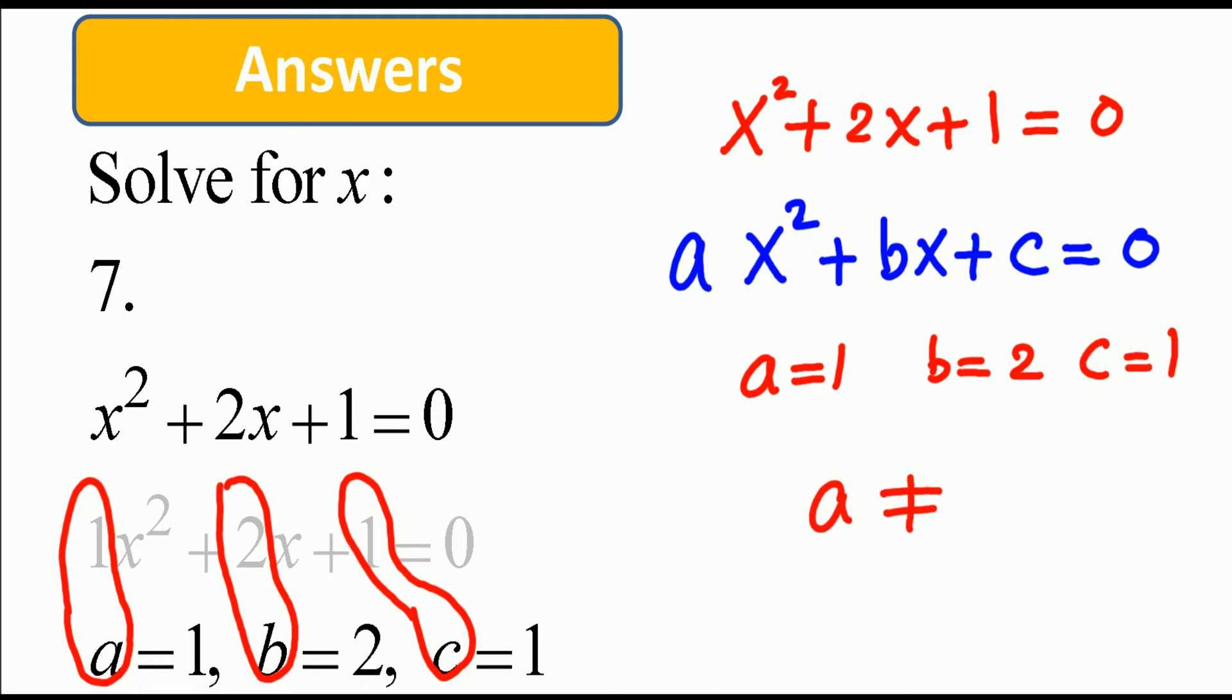a is not equal to 0. So what are our solutions? x is given by negative b plus or minus square root of b² minus 4ac, the whole thing divided by 2a.